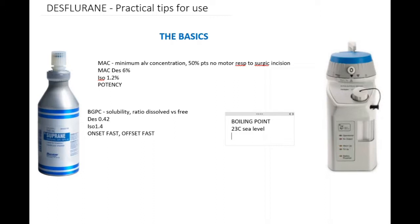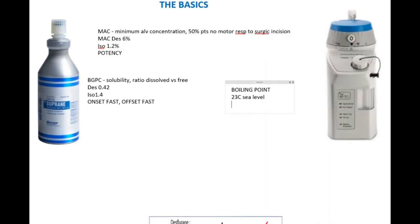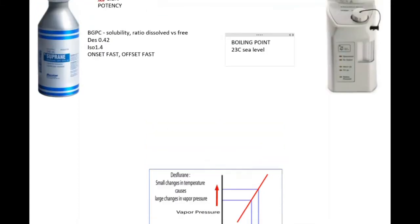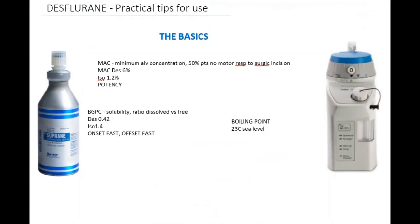With Desflurane, very small changes in temperature lead to very large changes in vapor pressure. It means for a small change in temperature of a degree or two we have a lot more particles available in the vaporizing chamber. If we were going to use the same type of vaporizer as we use for Sevoflurane or Isoflurane, you are going to set your dial to, for example, 6%, but you are going to get 7 or 8%, a lot more than what you expect because there are a lot more particles available to be added to your fresh gas flow.